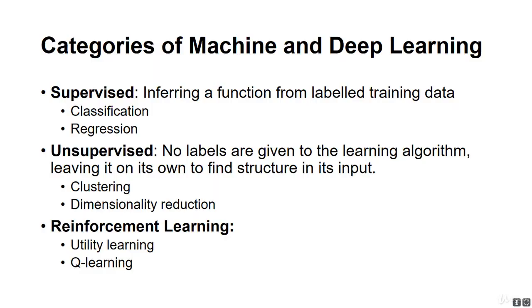Now, there are three major groups of machine and also deep learning. They are classified as supervised learning, unsupervised learning, as well as reinforcement learning.